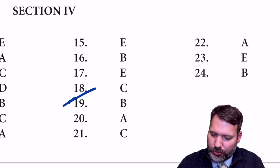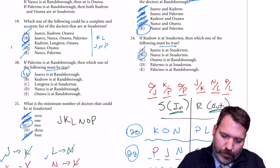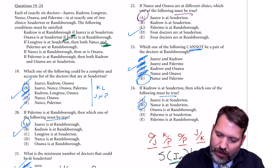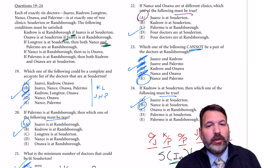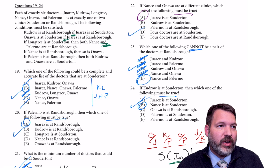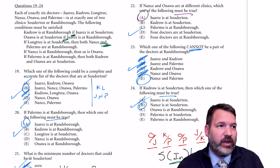Moment of truth — prep test 34, questions 19 through 24: B, A, C, A, E, B. We got them all right. This video is on the longer side — thank you for sticking through it. I'm working through all 400-ish official LSAC game releases. If you have a game you'd like to see me do, throw it in the comments below, and I'll see y'all next time.